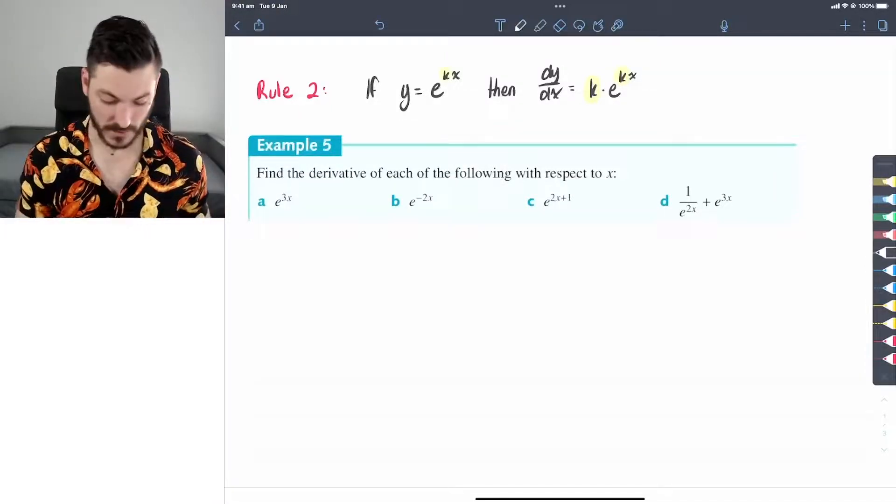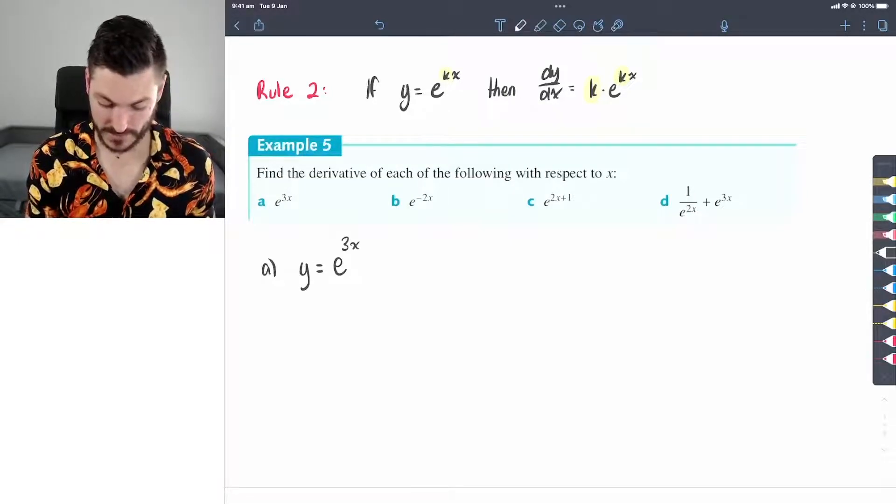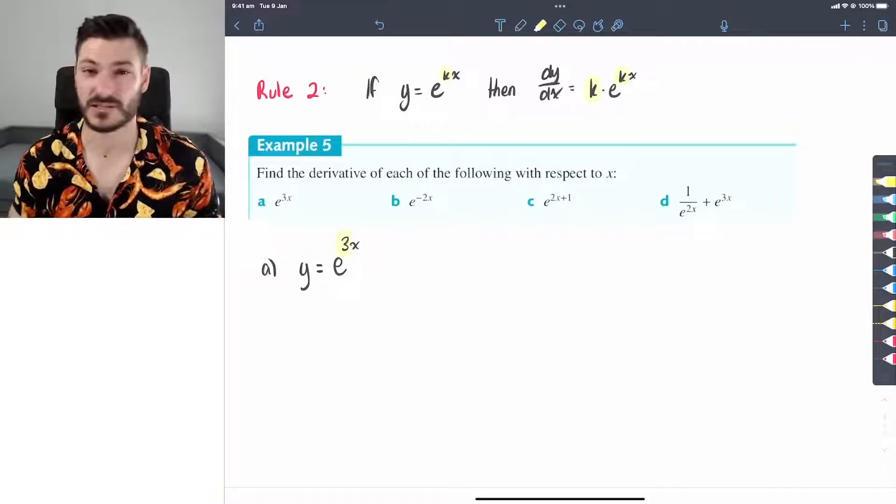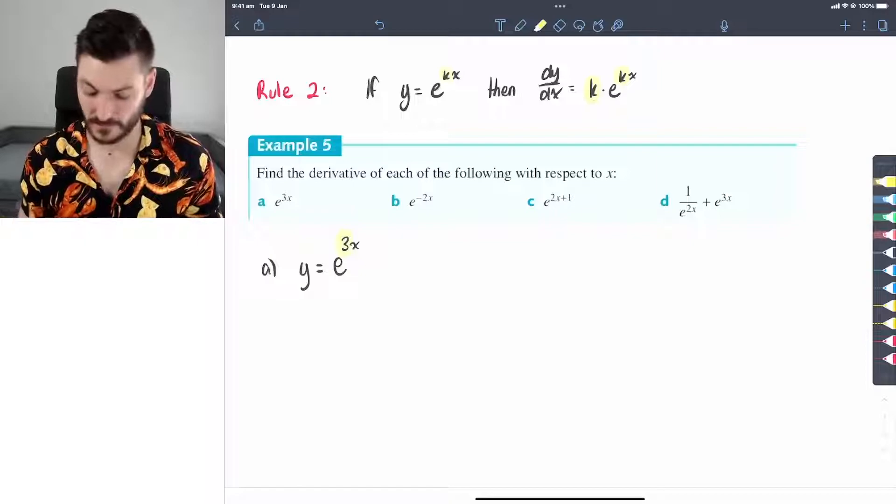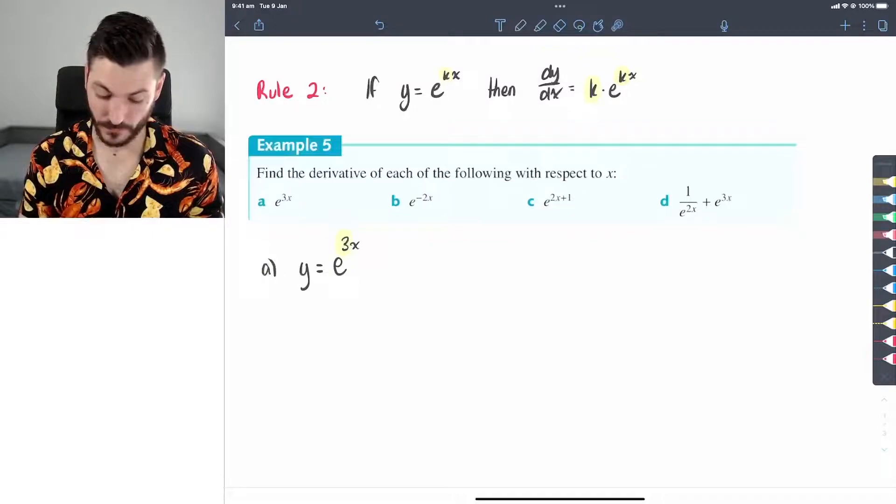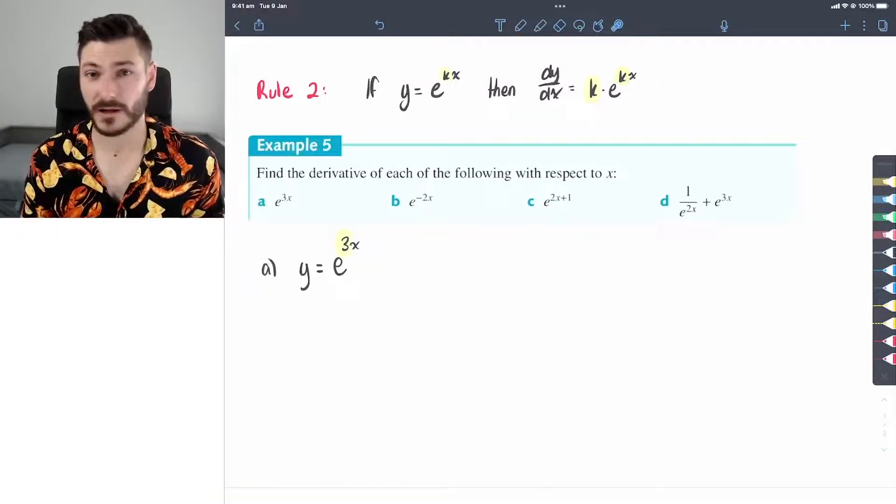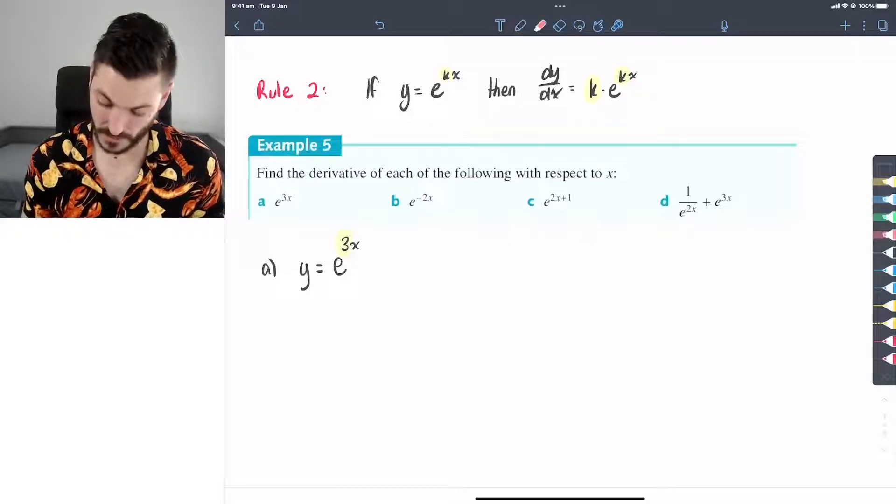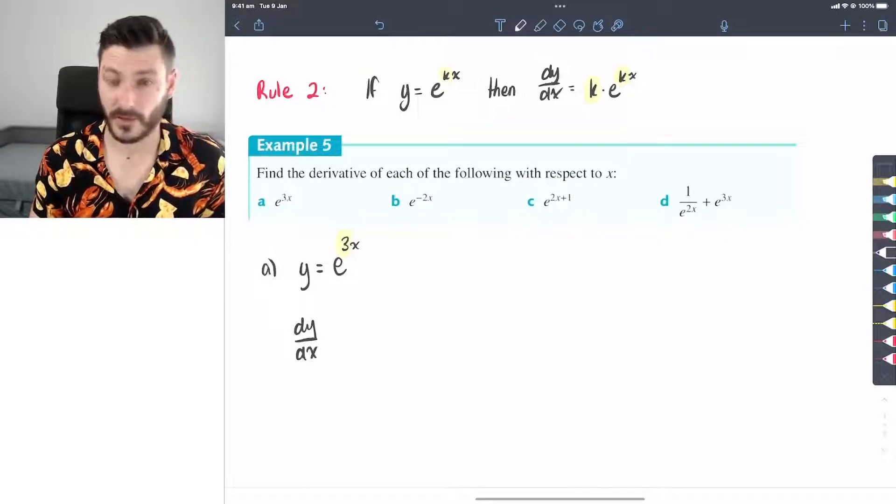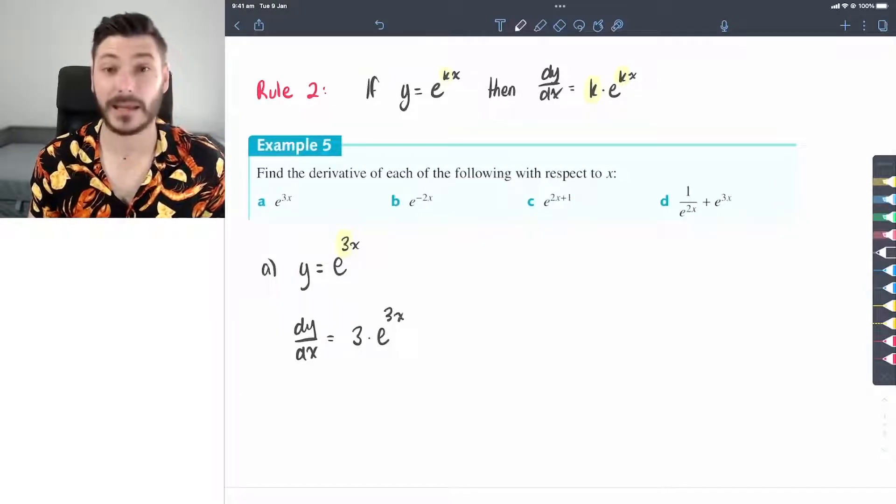And I'm going to do part a and b in this example. So part a is going to be y equals e to the power of 3x. And I'm going to highlight the 3 in yellow. I recommend you do this if you're starting out, use highlighters and follow along. So that means that this 3, if you look at the rule, this k is going to drop down the front of my function and multiply by the original. So the derivative of y, dy with respect to x is equal to 3 times e to the 3x.